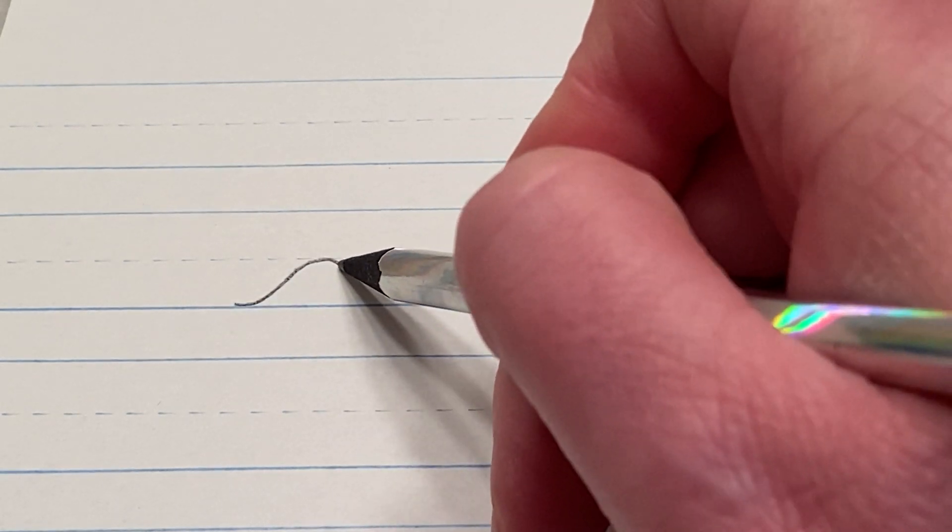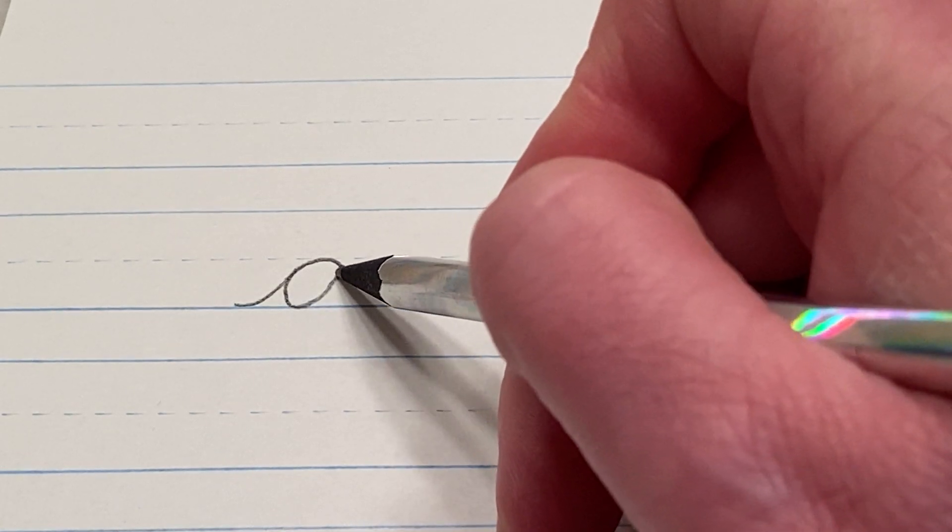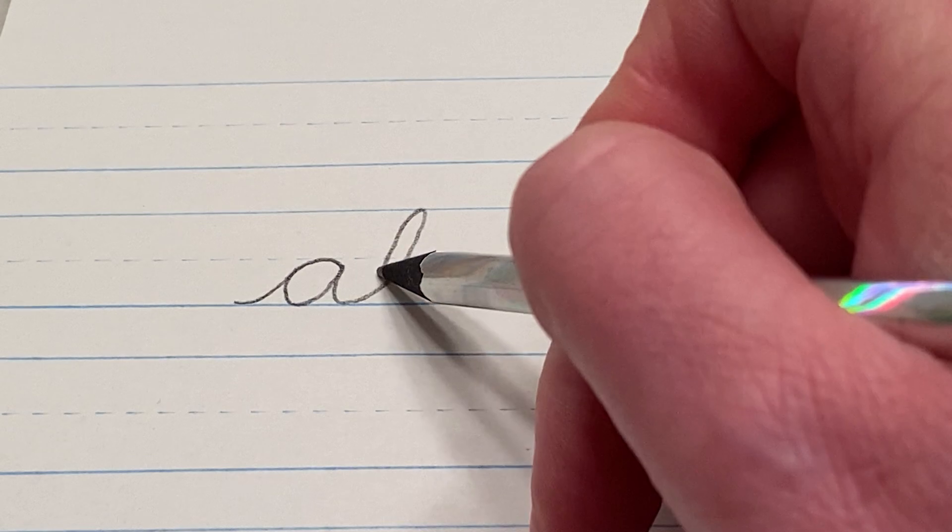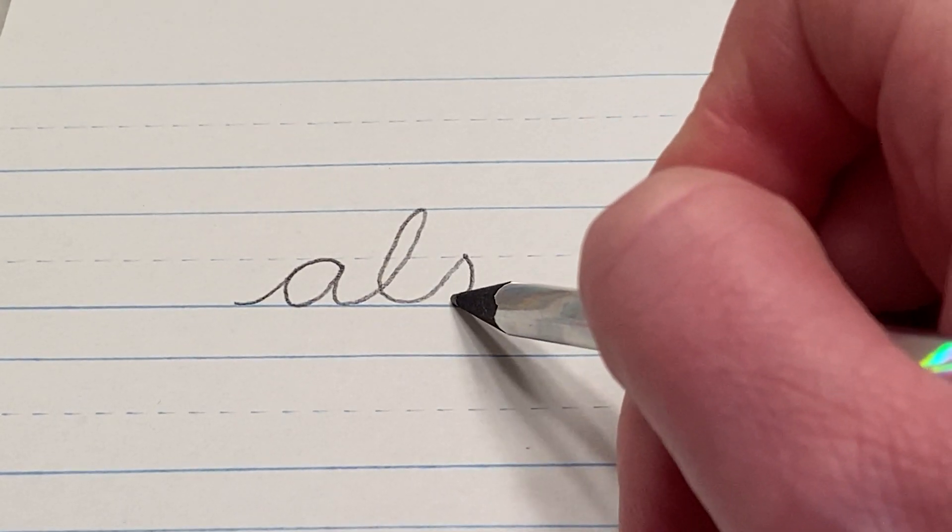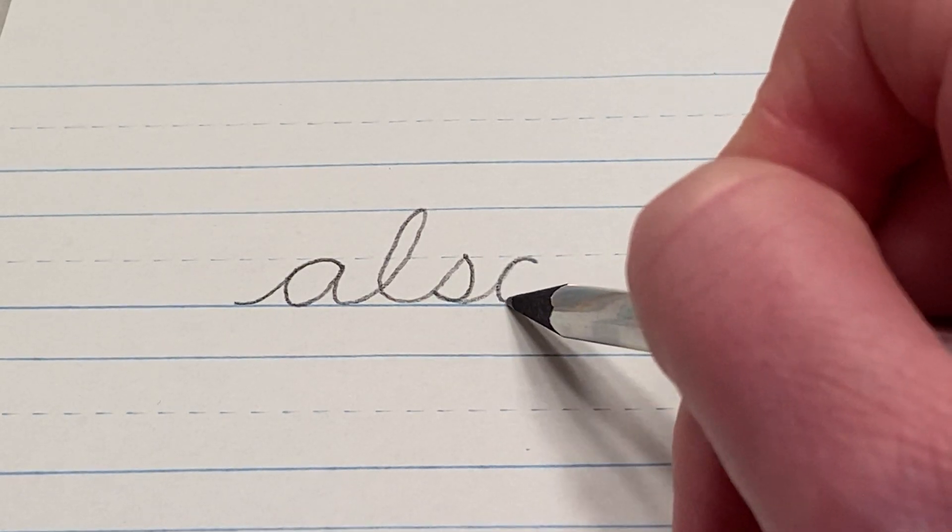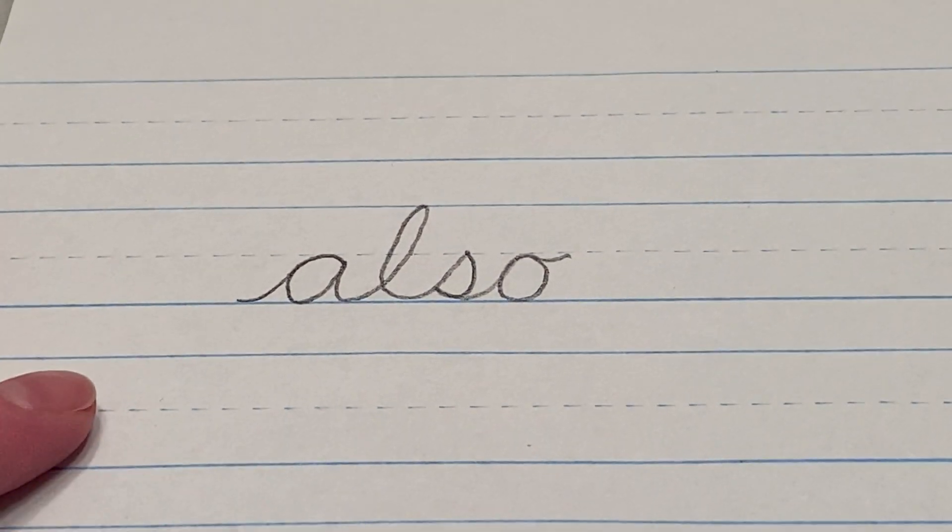If you're going to do it in all lowercase, you start at the floor, curve up, follow right back around, up, and you're going to go straight into the L, which goes all the way to the ceiling, and then cross towards the bottom, then straight into the S, which then connects to the O. That'll close the top, and there you have ALSO.